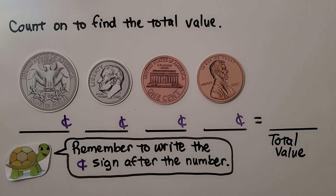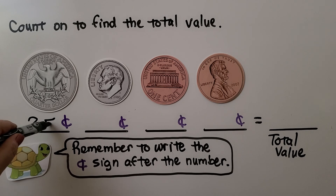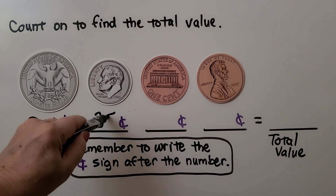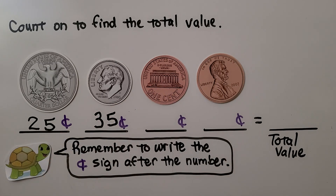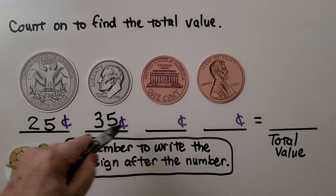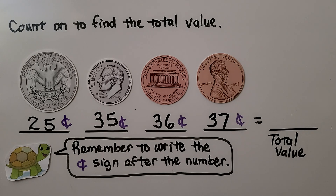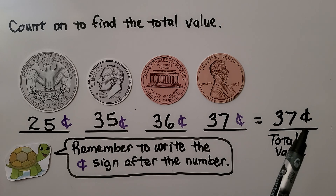Here we have a collection of coins, and we need to count on to find the total value, starting with the greatest value coin first. That's a quarter — 25 cents. We add a dime, which is 10 cents: 25 plus 10 gives us 35 cents. Then we count on with pennies by one: 35, 36, 37. The total value is 37 cents. We make sure to write the cent sign after the number.